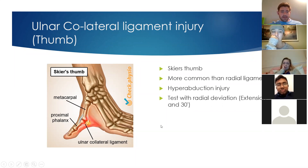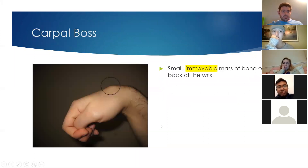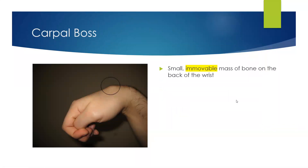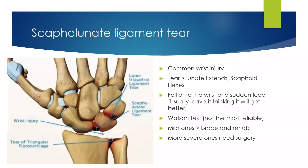The carpal boss is a small immovable mass of bone on the back of the wrist. Whereas a ganglion is usually something you can move and play with, a carpal boss is immovable — it's quite a hard piece there. There's pain around the area and so on.